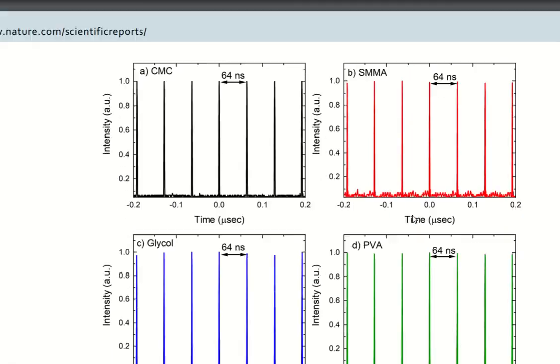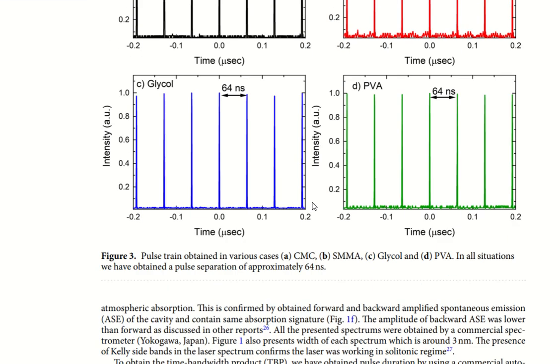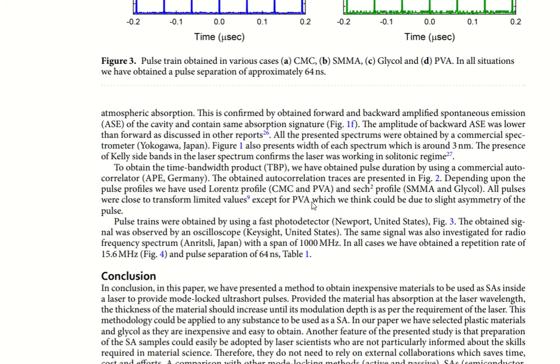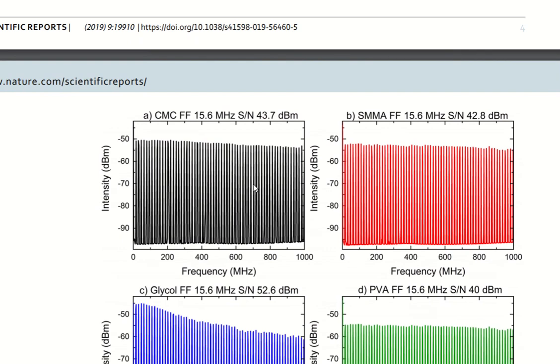Another property is to check the pulse separation, and this you can do with any photodetector. In this case you can see that the pulse separation was 64 nanometer. Since a laser cavity is an oscillator, you have standing modes and these standing modes give rise to frequency harmonics. The final property that is very important is to show the stability and harmonics.